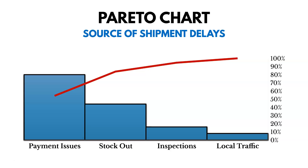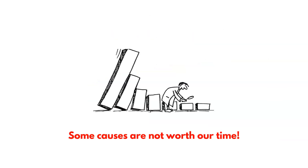A Pareto chart helps us think about what our priorities should be — we ought to try to address payment issues first to solve most of those defects. This cartoon shows a Pareto chart where the biggest priorities are falling on top of the guy who's too caught up in the small details, the things that just don't matter as much. Some causes are just not worth our time. A Pareto chart is a great way to prioritize where we should focus our improvements.